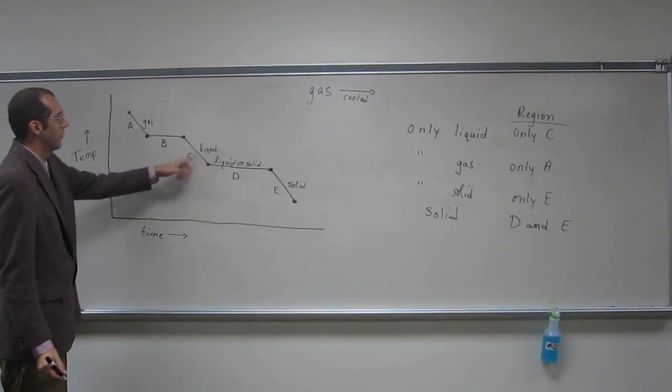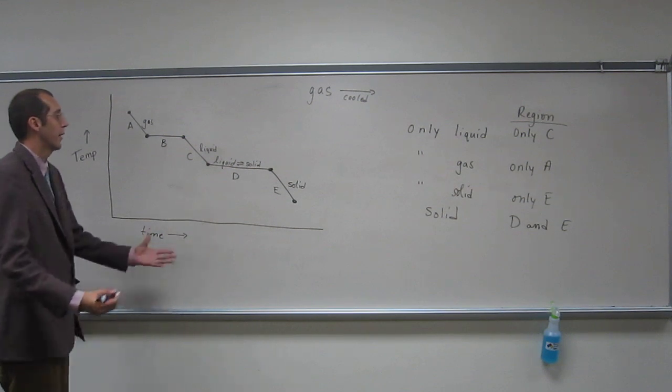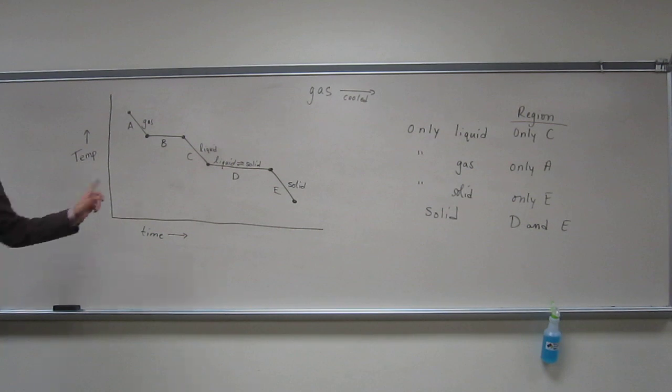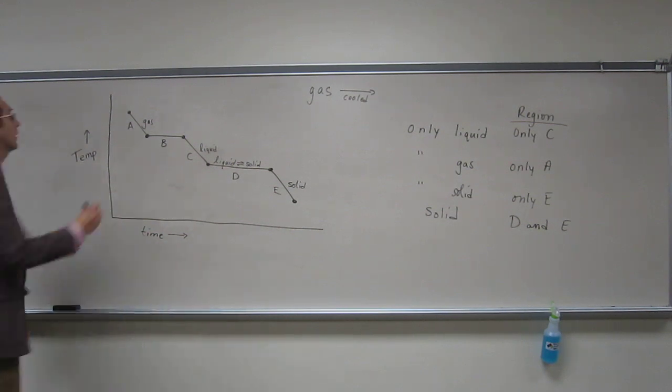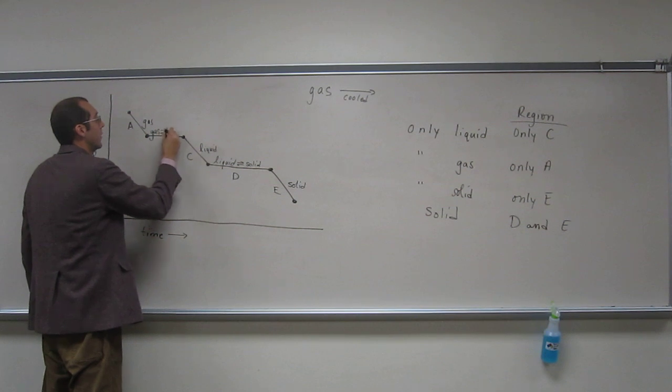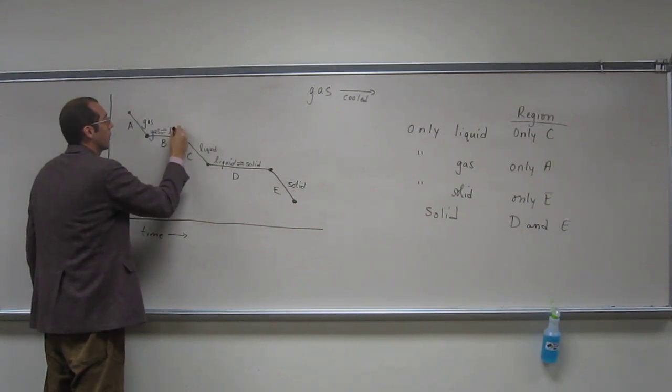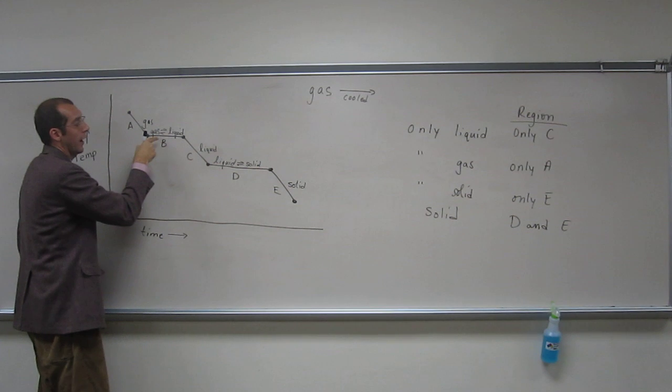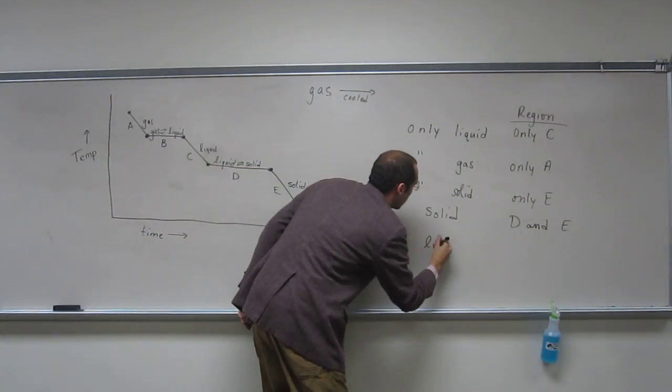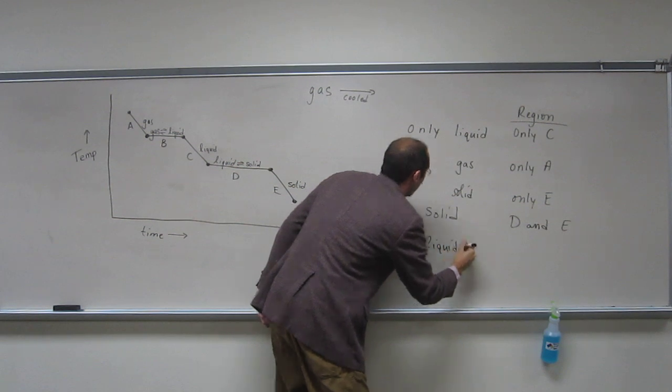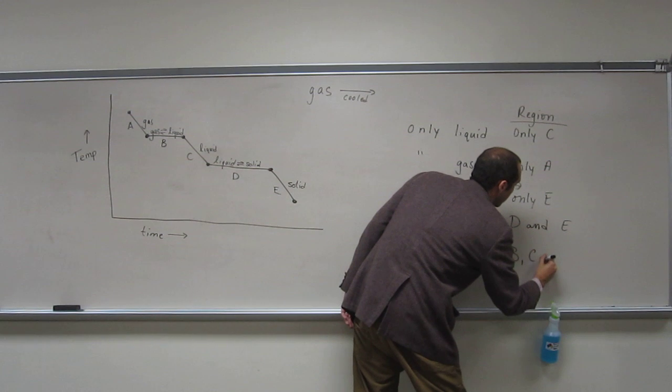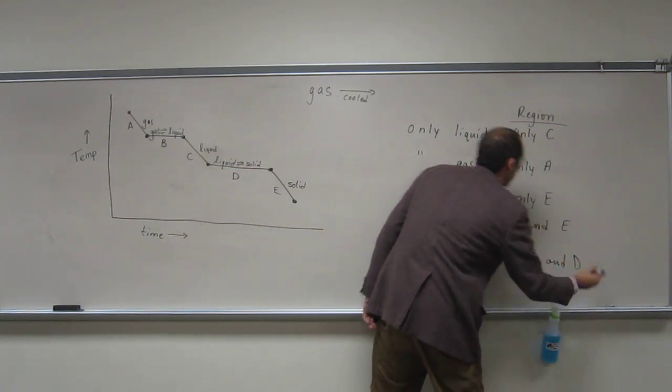And then, of course, if you wanted to say where is there a liquid, where is there a liquid, guys? B, C, and E, right, because we've got here, we've got this gas-liquid equilibrium, so gas-liquid, so there's a liquid there, a liquid there. So solid if there's a liquid, it's going to be B, C, and D.